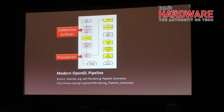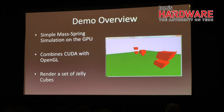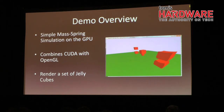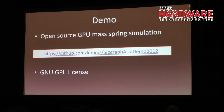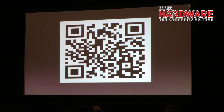Now I'm going to talk about the demo that I wrote for this talk. It is a simple mass-spring simulation that runs entirely on the GPU. It combines CUDA with OpenGL, and it renders a set of jelly cubes interacting with one another. It's intended to show you how you can write a tool that will work in a film production environment. It includes abstraction of interfaces and objects, support for easily adding or removing objects from the simulation, and altering parameters in real time. The source code is available on GitHub under the GNU GPL license.